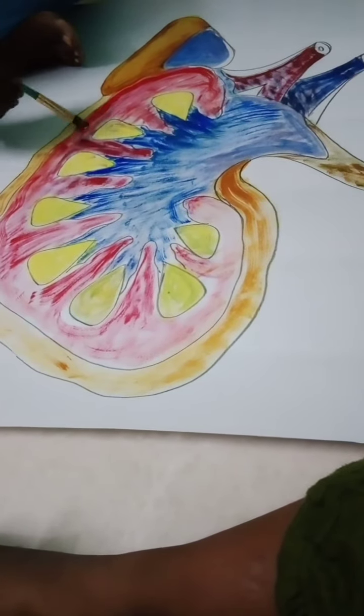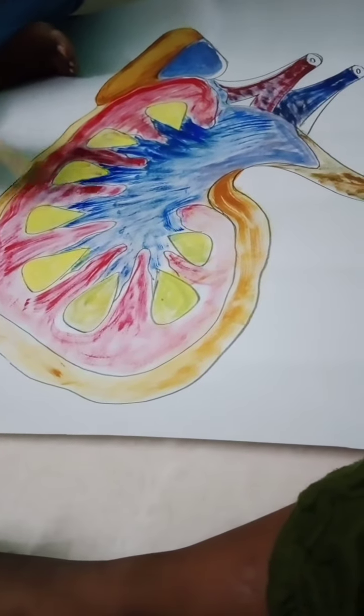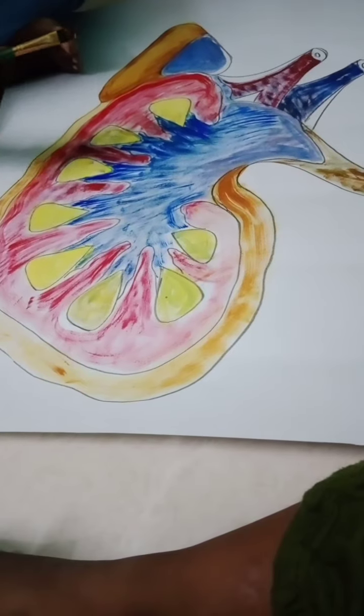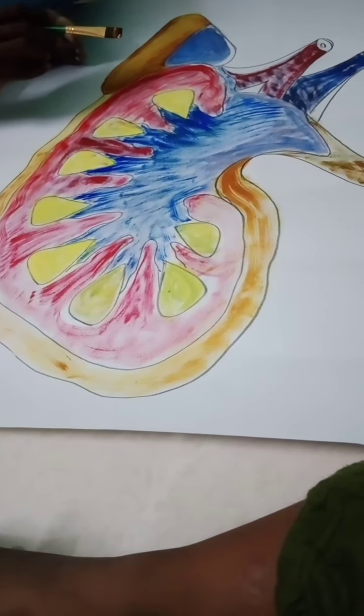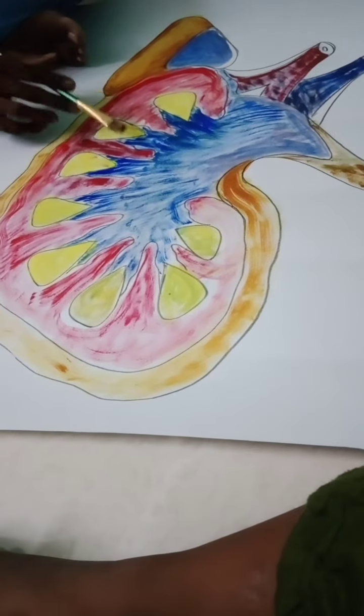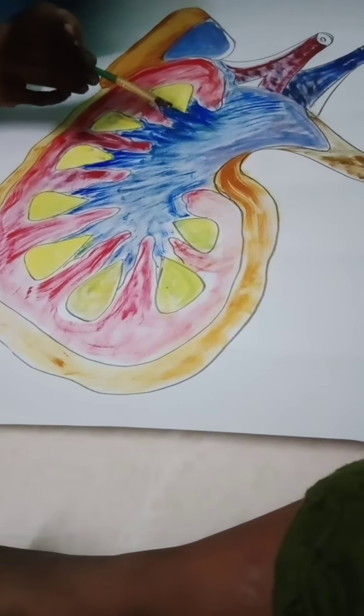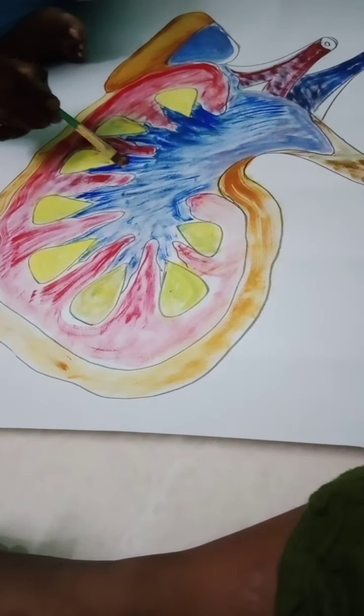So slowly these kidney stones leads the failure of the functioning of the kidney. That condition is called uremia or kidney failure. So even heart and brain remaining organs must require the pure blood, in the sense pure nothing but filtered blood.